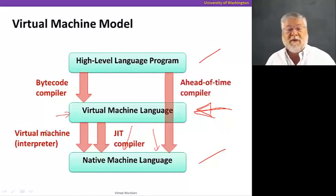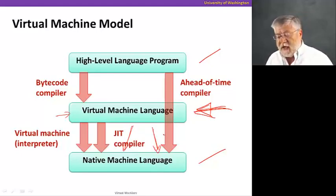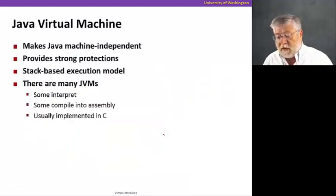And of course, we have the ahead-of-time compiler that does that directly from the high-level language program. The reason for this virtual machine is to create a place where it's very easy for us to compile or interpret to different architectures. That's what makes Java more portable.